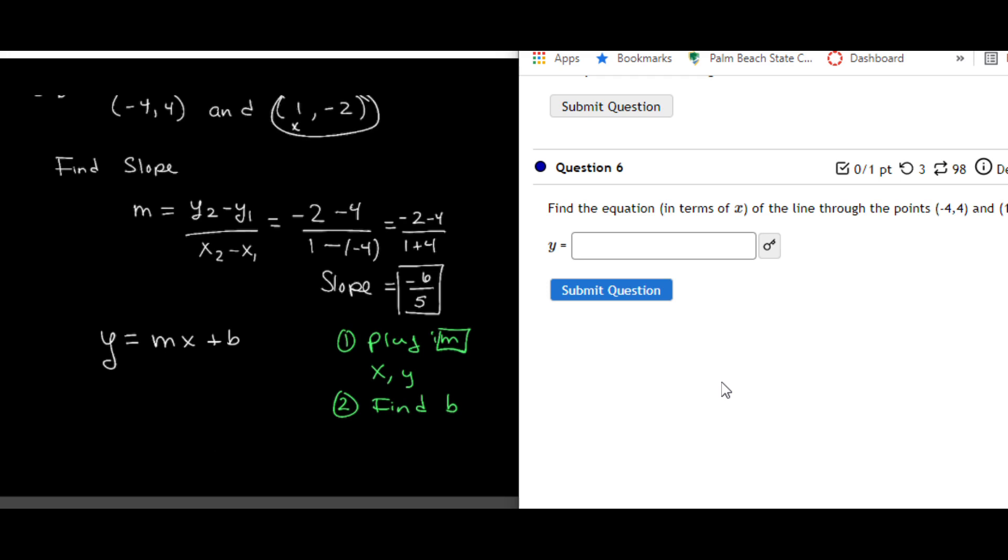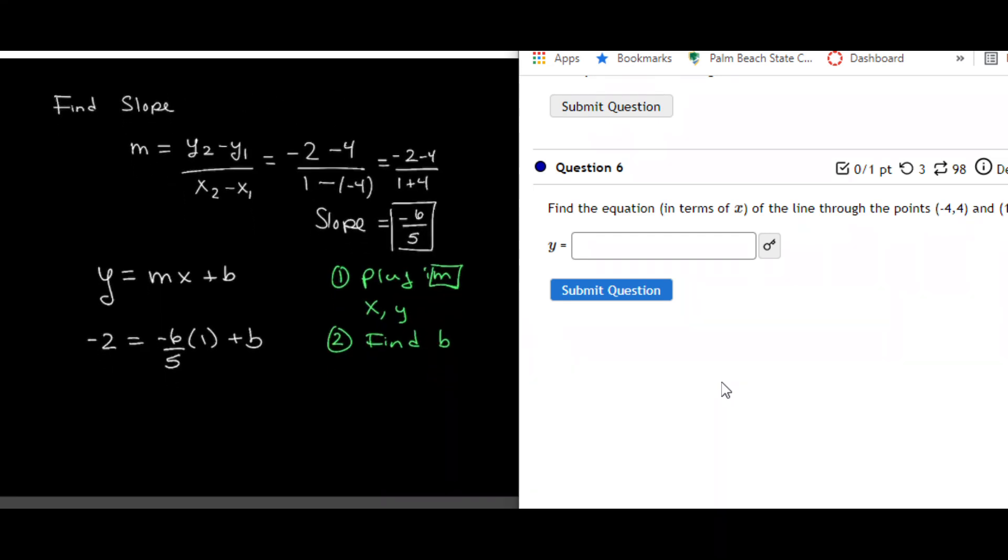Remember x is my 1. Y is my negative 2. So I have negative 2 is equal to negative 6 over 5, my slope. My x value is 1. And I am now solving for b. So to go through and finish this, this leaves us with negative 2 is equal to negative 6 over 5 plus b.